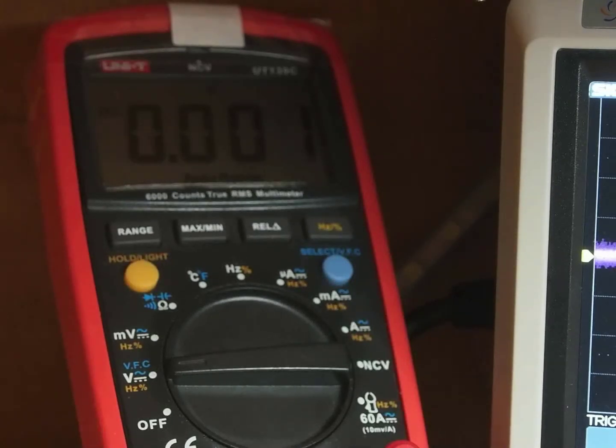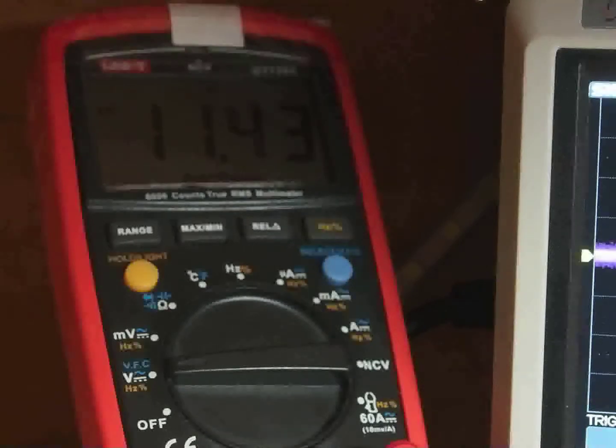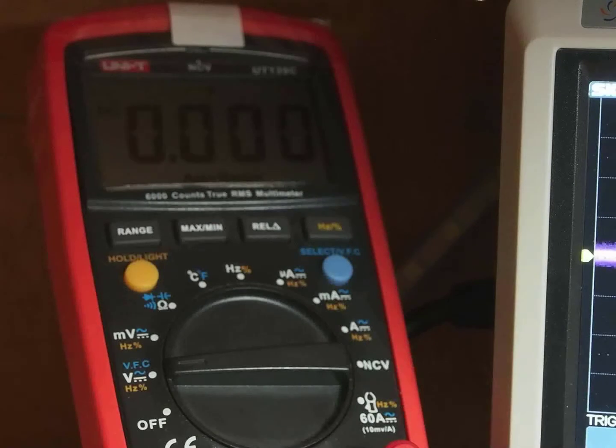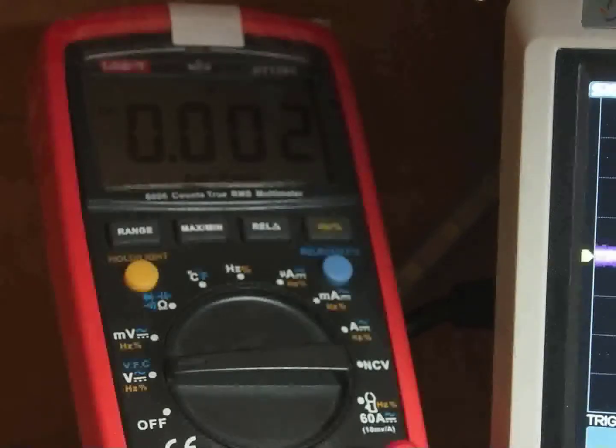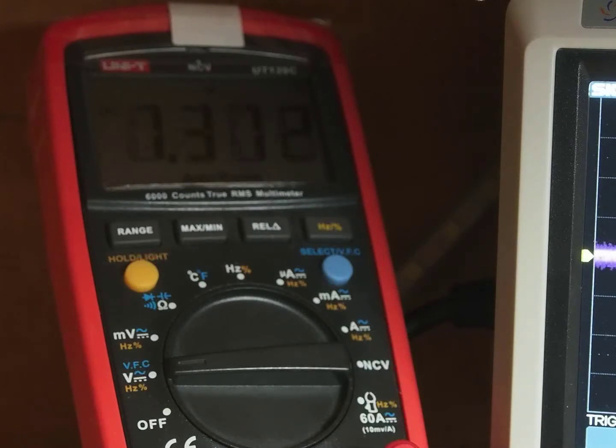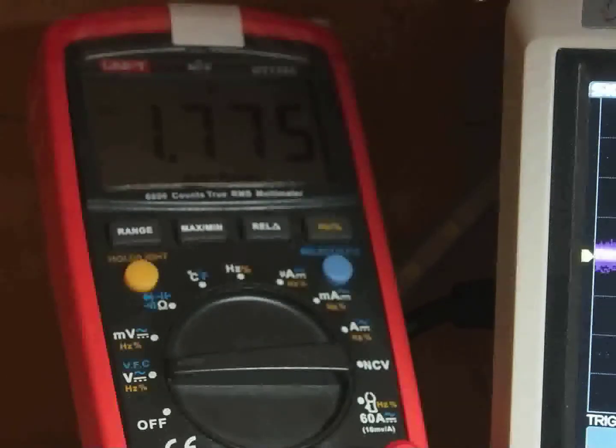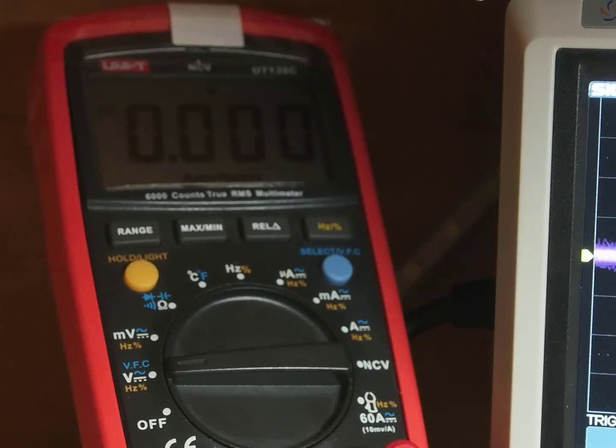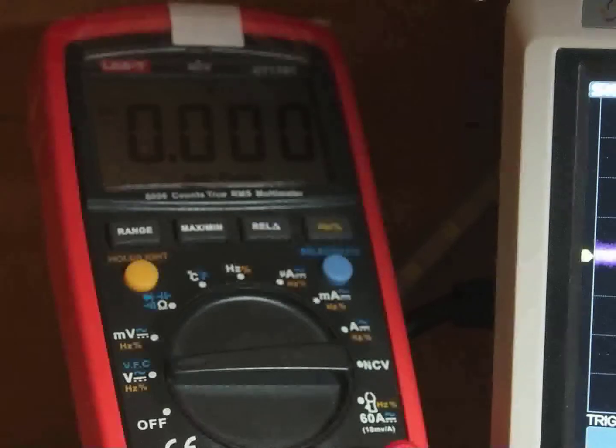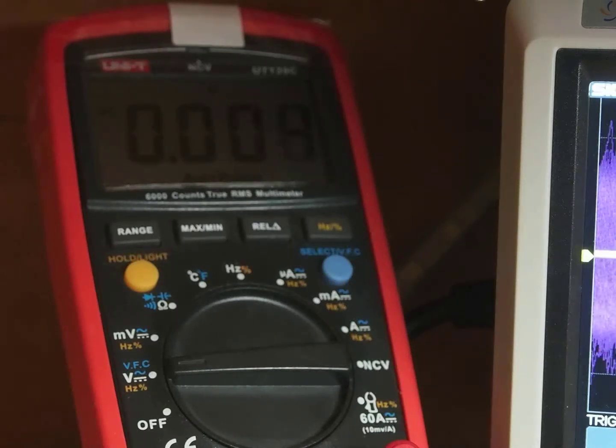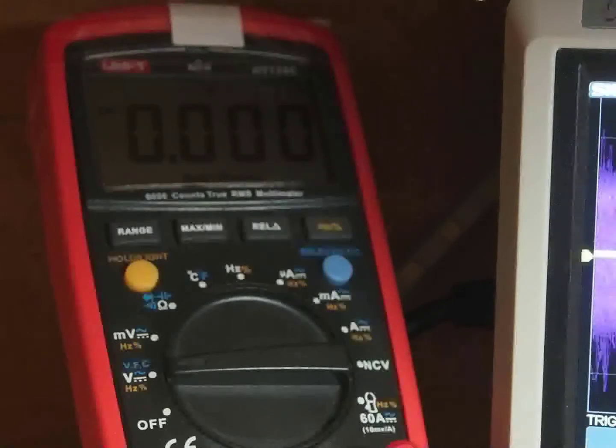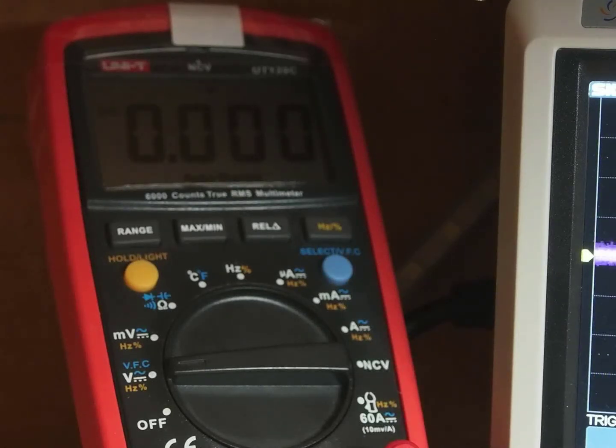First let's take some DC measurements. First the supply voltage which is 14.7. The voltage at the drain, 11.43. Voltage at the source, 1.775, let's make it 1.78. And of course the voltage at the gate is 0. Okay, well let's put a signal on it.